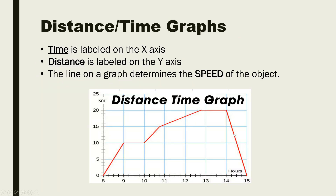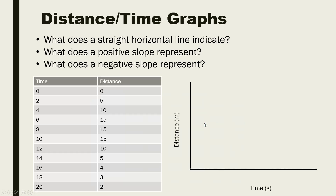We can see the negative slope here: the object was covering distance, covering more distance, and then suddenly stops. If this is a person traveling to their grandmother's house, at hour 14 it looks like they either reached their destination and turned around, or gave up after 14 hours and went back home. Make sure you know what positive and negative slopes mean for distance-time graphs.